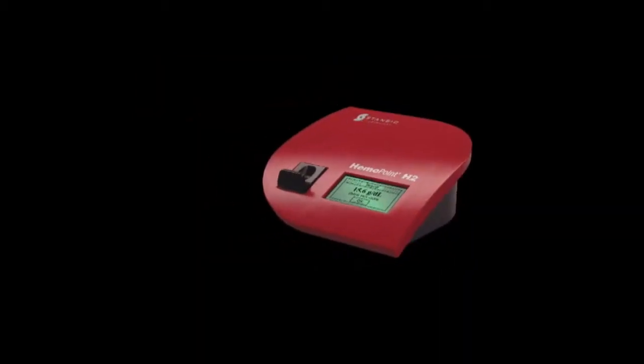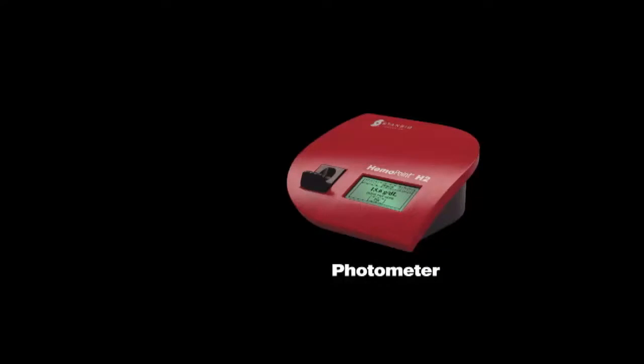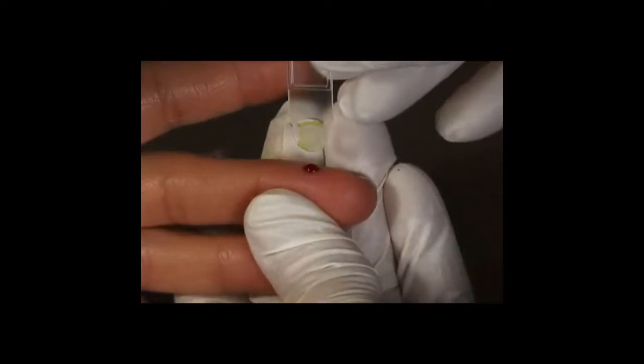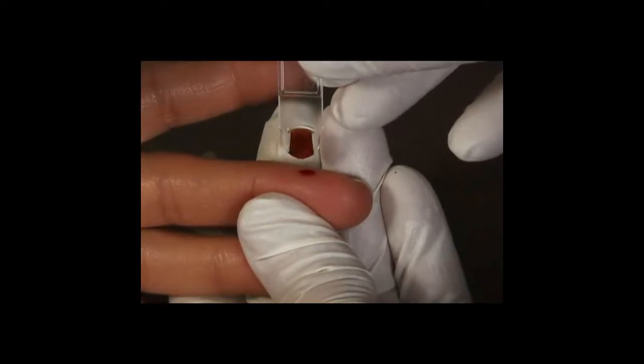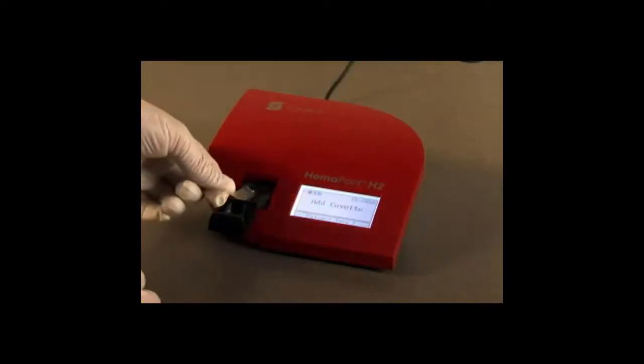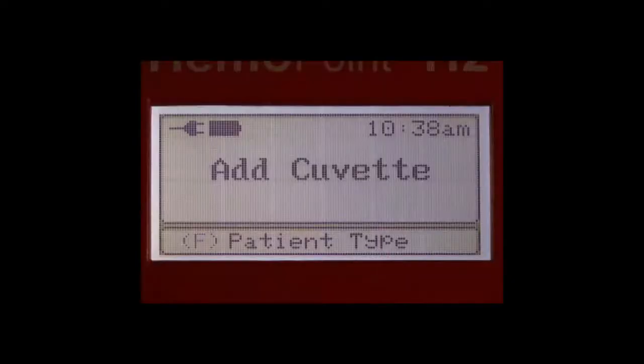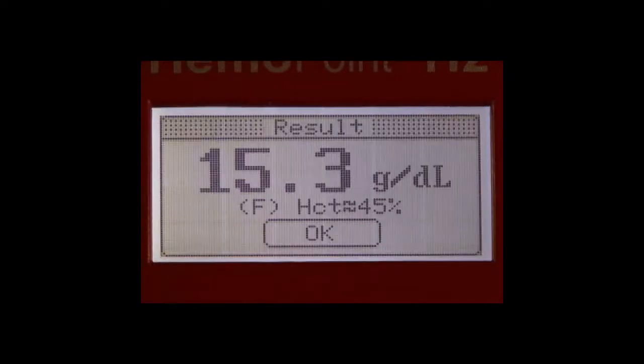The Hemopoint H2 system is intended for the quantitative determination of hemoglobin in whole blood of adults, infants, and children. It consists of a dedicated photometer and individual single-use micro-cuvettes filled with reagents. Using the micro-cuvette, a small amount of arterial, venous, or capillary blood is taken up by capillary action. The filled micro-cuvette is inserted into the Hemopoint H2 photometer. The color produced by the chemical reaction in the micro-cuvette is measured and the hemoglobin value is displayed.